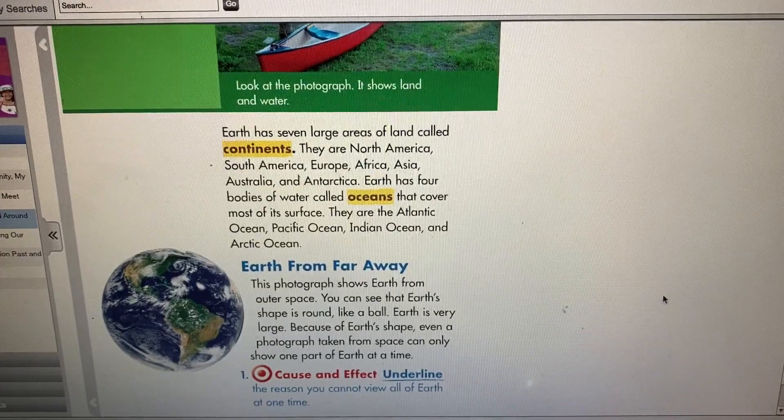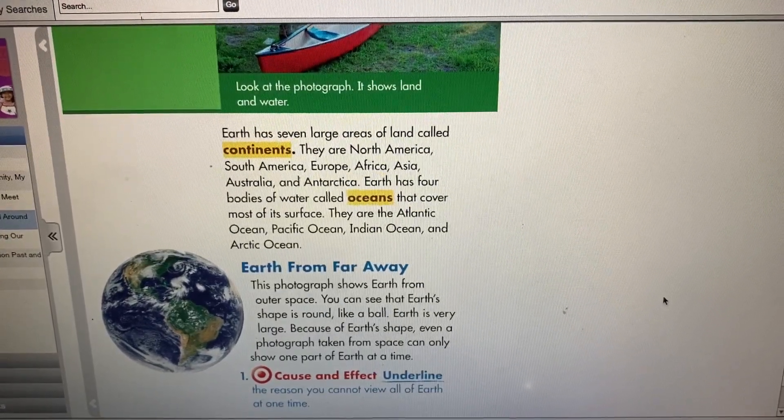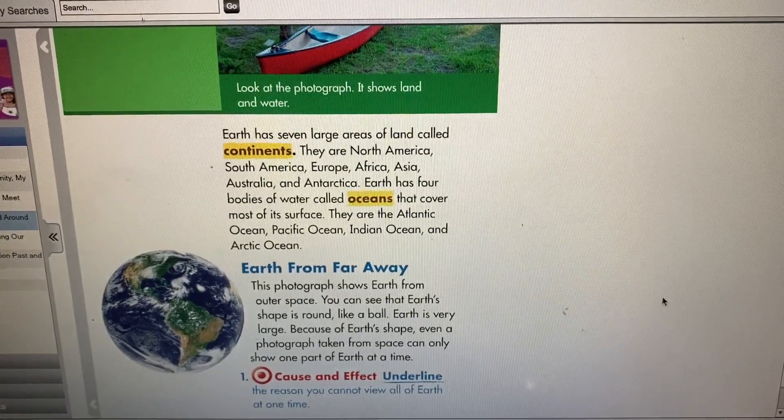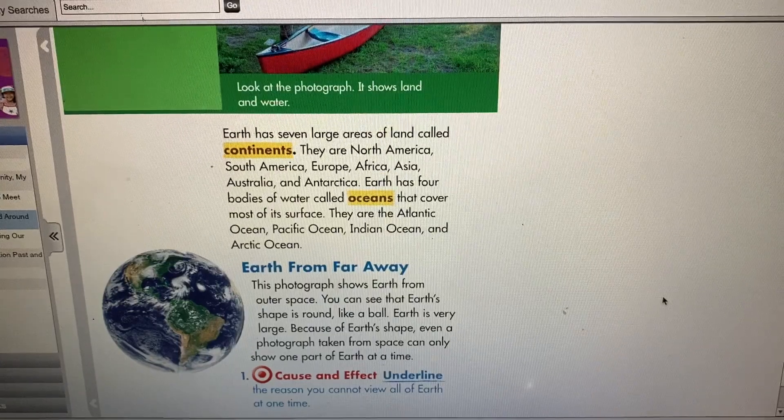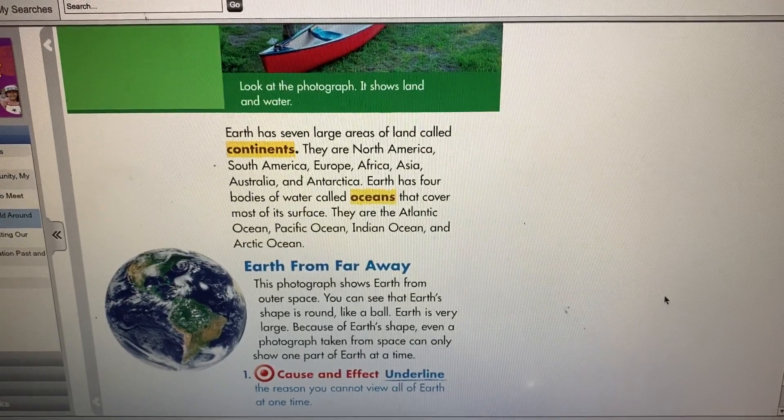Earth from far away. This photograph shows Earth from outer space. You can see that Earth's shape is round like a ball. Earth is very large. Because of Earth's shape, even a photograph taken from space can only show one part of Earth at a time.